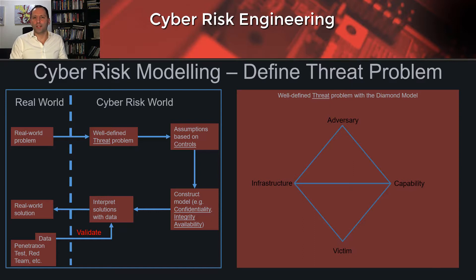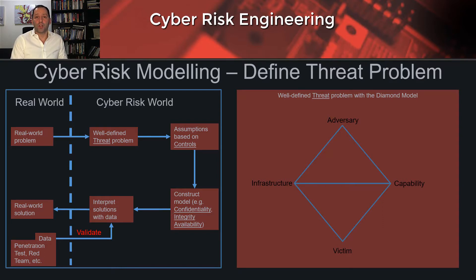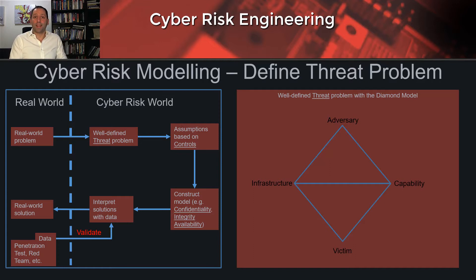Then on the left and right hand side you've got capability and infrastructure. That's tied into sponsorship as well — if you think about how well equipped your attacker is when they're targeting you. That's in a nutshell how to best take a threat problem and define it in four dimensions: the infrastructure, the capability, who the victim is, and who the adversary is. Thank you for watching.